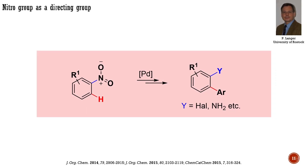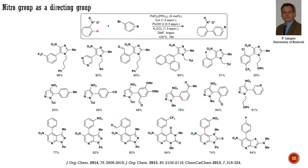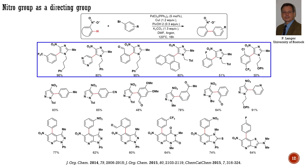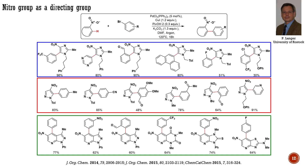The nitro group is another highly promising directing group. Its advantage over others is attributed to the fact that it can be converted into essentially anything. The main disadvantage is that the nitro group, being a strong electron-withdrawing group, makes the systems to which it is bound less reactive. As an example, the work performed by the group of Langer at the University of Rostock, Germany: they developed a palladium-catalyzed methodology suitable for the selective CH arylation of several heterocyclic systems. These conditions were quite successful for imidazoles, pyrazoles, and purine-like compounds.